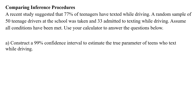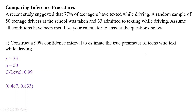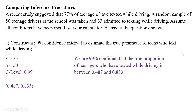We are just going to use our calculator to get the result and conclude. For part A, we're going to construct a 99% confidence interval to estimate the true parameter of teens who text while driving. To construct it, we only put three things in our calculator. This is the one prop Z int on your TI-84 or whatever statistical software you are running. X and N together make up our sample proportion, and our confidence level is 99. Inputting that into our calculator gives us a confidence interval that looks like that.